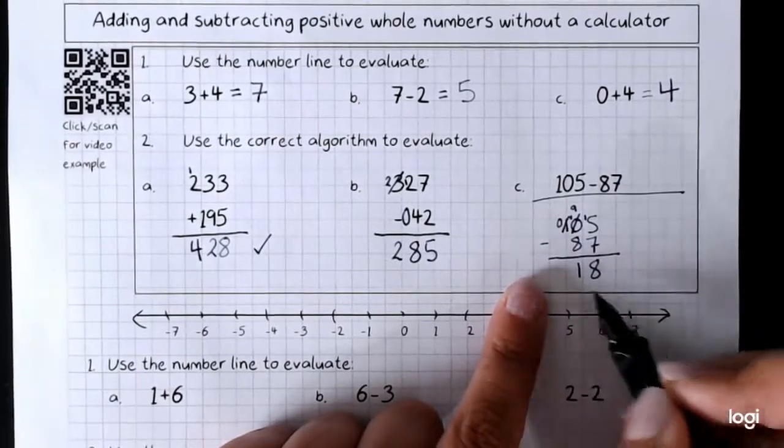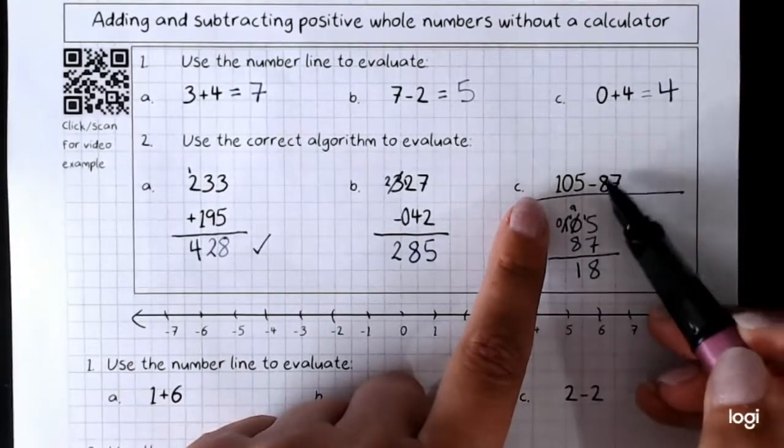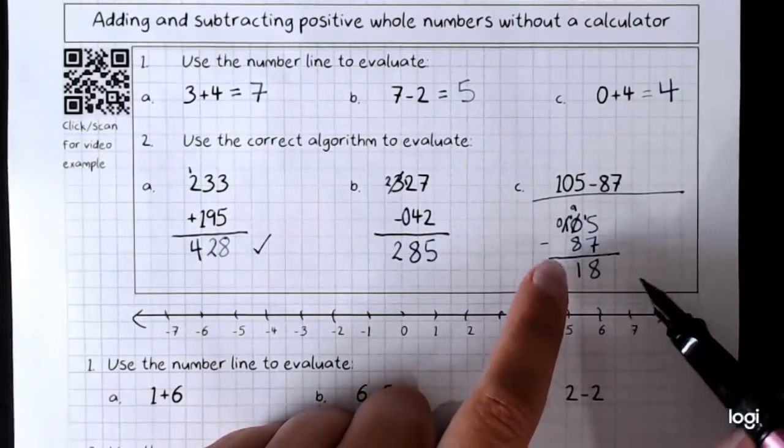And 0, we're left with 18. A quick check. Around about 100 minus around about 85. Yep, we should be getting around about 20. That's okay.